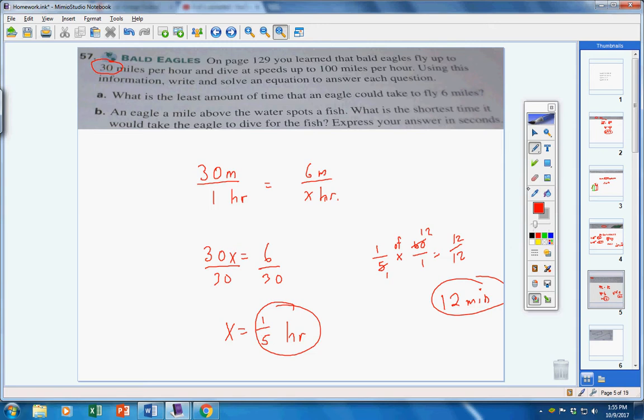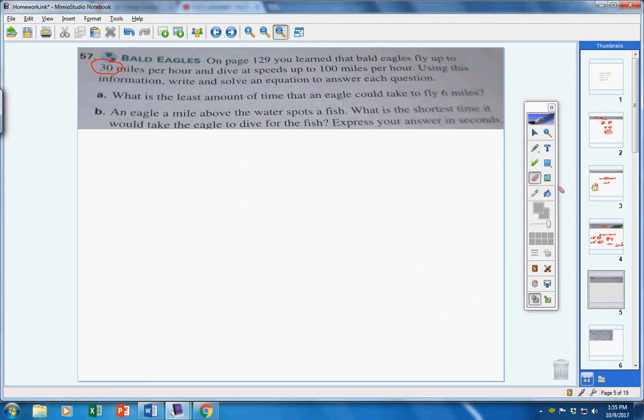Moving on to part B, an eagle spots a fish and it dives. The eagle is one mile above the water. What's the shortest time it will take? The eagle is right up here, and can dive up to 100 miles per hour. If we want the shortest time, that means we want the fastest speed. So, I have a nice rate of 100 miles in one hour, and this eagle is diving one mile. So, if 100 miles is one hour, then one mile would be x hours. 100 times x is 100x, 1 times 1 is 1. Divide both sides by 100, and my answer is 1 one-hundredth of an hour.